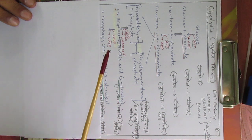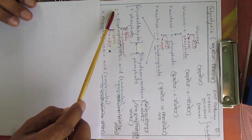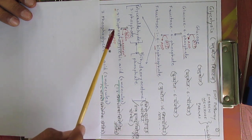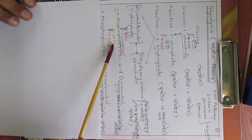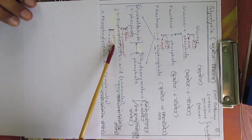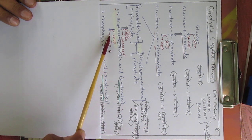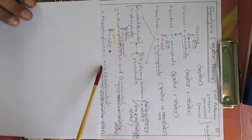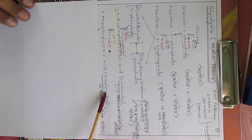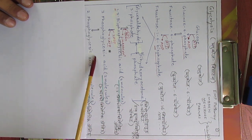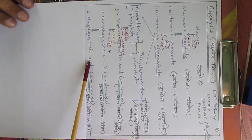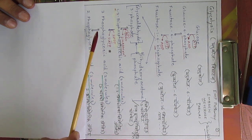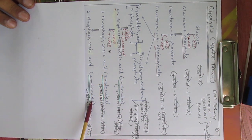From the two molecules of 1,3-bisphosphoglyceric acid, one phosphate group from each is removed and attached to ADP molecules, resulting in the formation of two ATP molecules. The next product formed is two molecules of 3-phosphoglyceric acid.